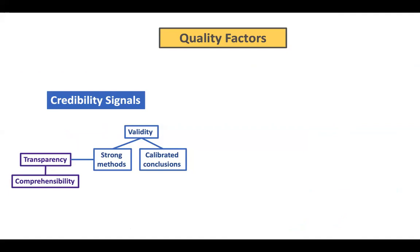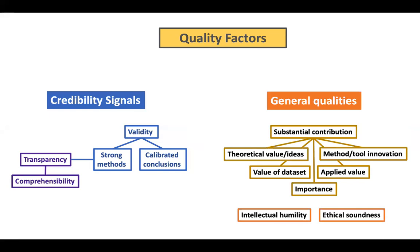These transparency and validity factors I call 'credibility signals.' Work that is more transparent can earn more credibility because it subjects itself to more scrutiny — if there are errors, they're more likely to get caught. Work that is more valid, when examined through that transparency, has more credibility if it stands up to scrutiny. I would also add that prior plausibility factors into credibility, though it's not itself a quality signal — you can do high quality research on claims with very low priors, but as a reader I might be more skeptical of those claims.